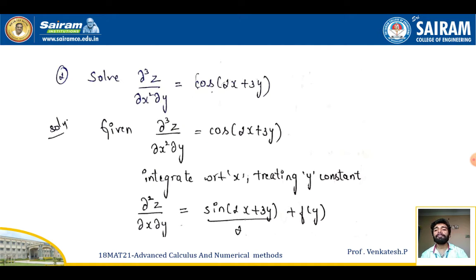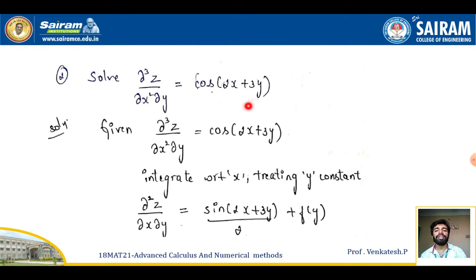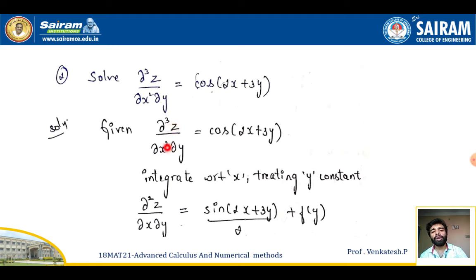One more example: solve ∂³z/∂x²∂y = cos(2x + 3y). This is also a non-homogeneous partial differential equation. Given ∂³z/∂x²∂y = cos(2x + 3y), call it equation number one. To eliminate ∂³/∂x²∂y, we have to integrate this equation three times.